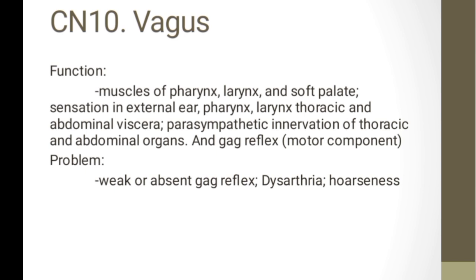Cranial nerve 10 is the vagus. Its function includes innervation of the muscles of the pharynx, larynx, and soft palate; sensation in the external ear, pharynx, larynx, thoracic, and abdominal viscera; and parasympathetic innervation of thoracic and abdominal organs. It also controls the gag reflex as the motor component. The vagus has complex functions including the parasympathetic nervous system — importantly, stimulating the vagus nerve causes vagal slowing of heart rate. Common problems are weak or absent gag reflex, hoarseness, and dysarthria. Remember: only vagus and glossopharyngeal affect the gag reflex.